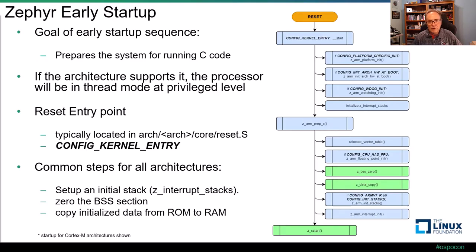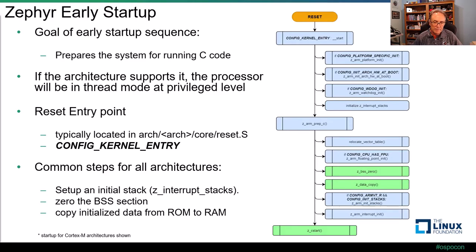Next, INT_ARCH_HARDWARE_AT_BOOT_CONFIG calls z_arm_init_arch_at_boot, which resets the system control block and core registers to an initial state. This is useful when firmware is chain-loaded by a debugger or bootloader to guarantee that the internal states of core blocks are consistent. Then, if a watchdog is enabled, the watchdog timer is initialized, followed by the interrupt stack. We then transition to C code preparation: vector table relocation, floating point hardware initialization if needed, zeroing the BSS area, and copying the initialization data.